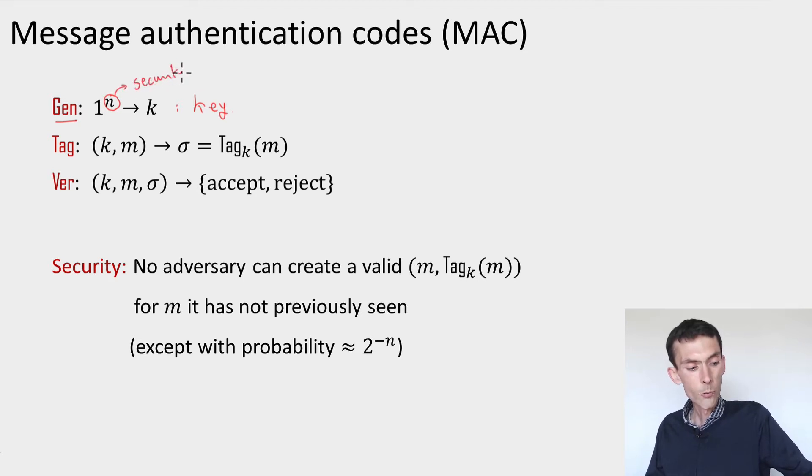The bigger the n, the more secure the authentication code will be. Once you have a key, there's two different procedures. The first procedure takes as input the key and the message m, and it produces a signature or a tag of that message. This is supposed to authenticate the message.